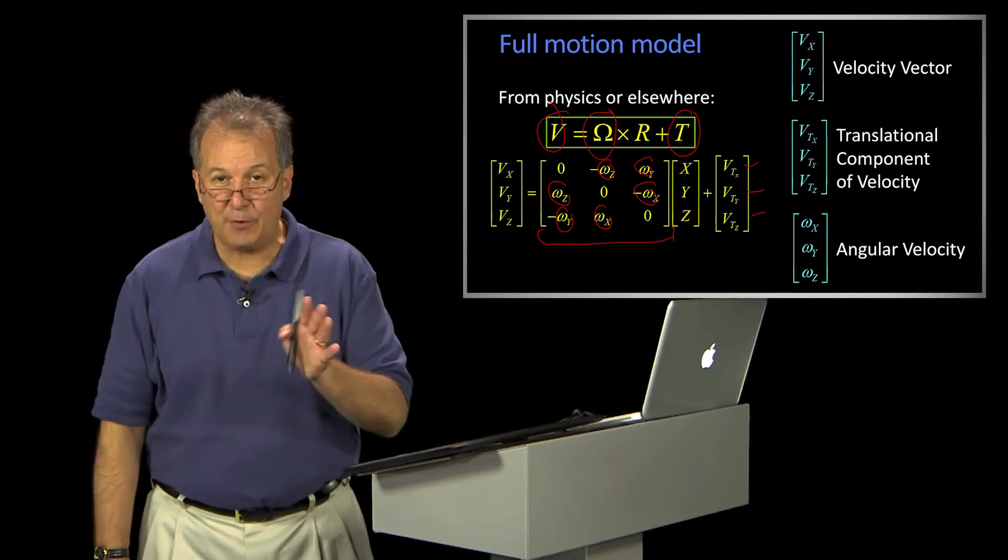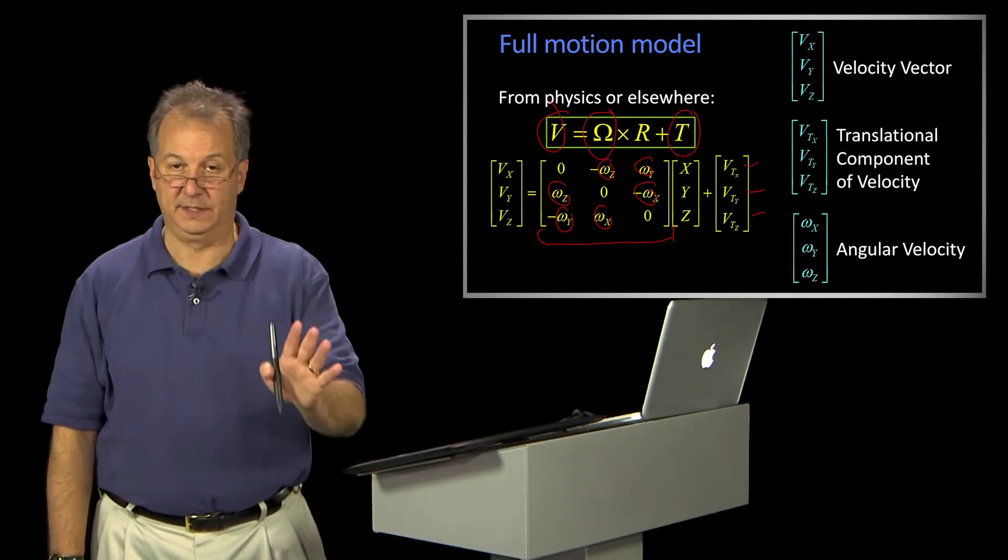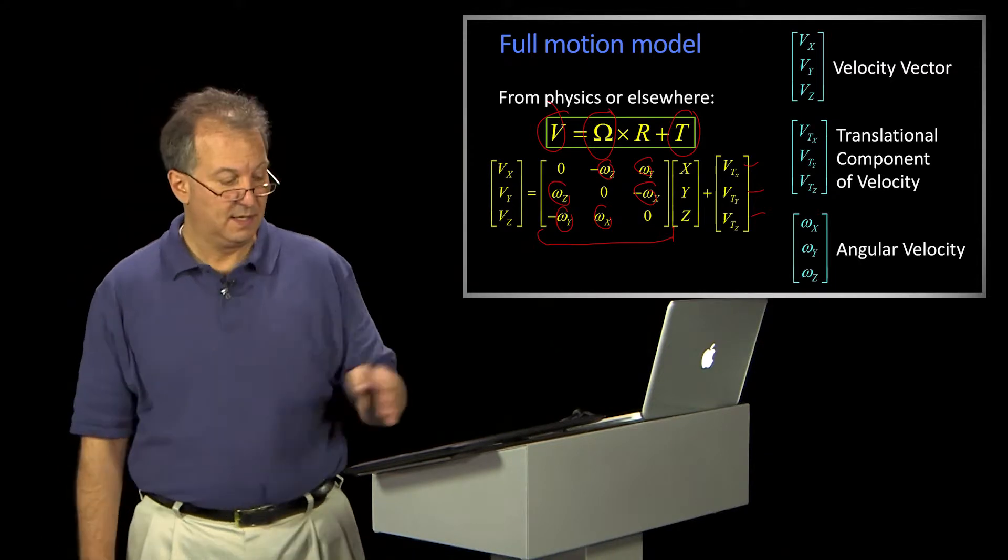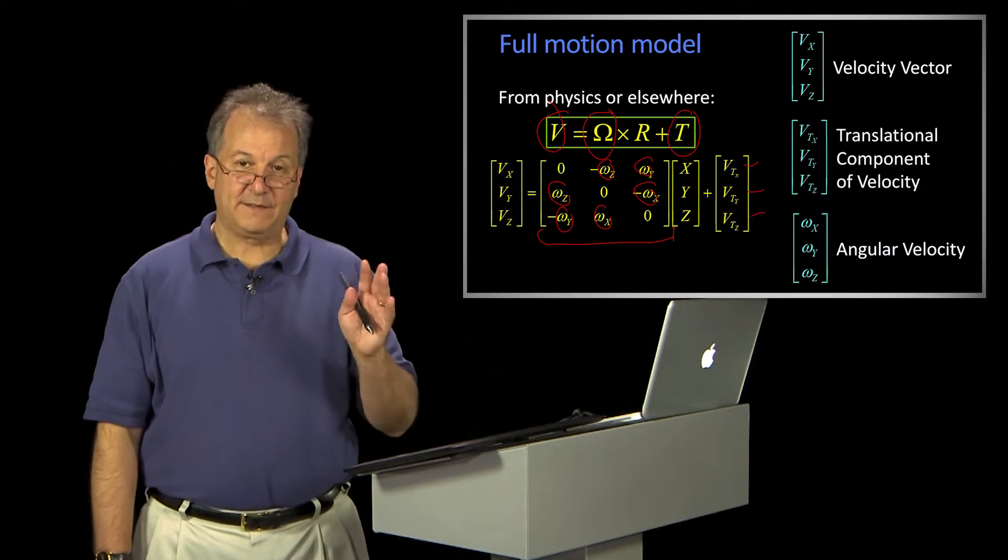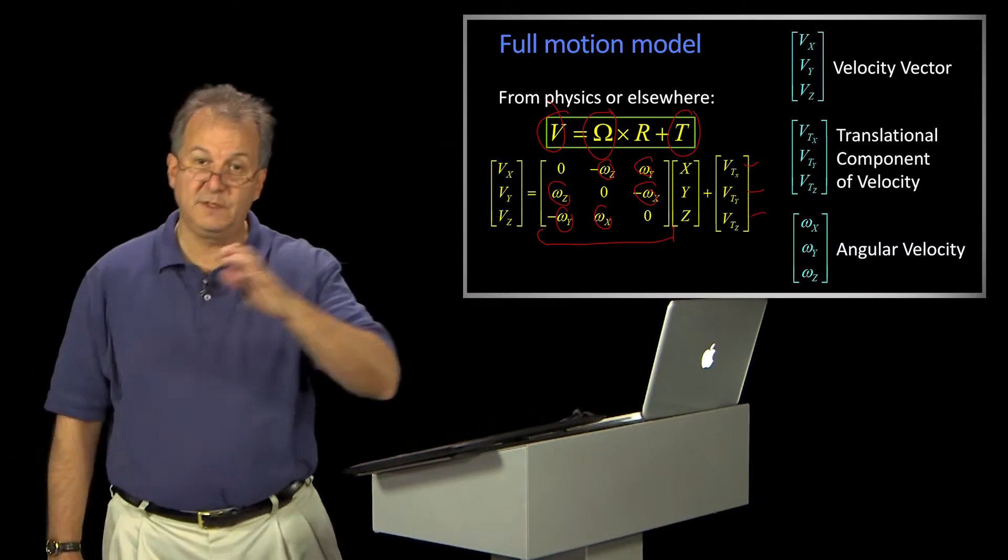In order to figure out how things are moving in the image, this is how they're moving in the world. In order to figure out how they're moving in the image, we have to go from world coordinates to image coordinates.